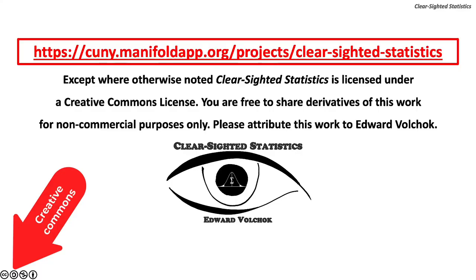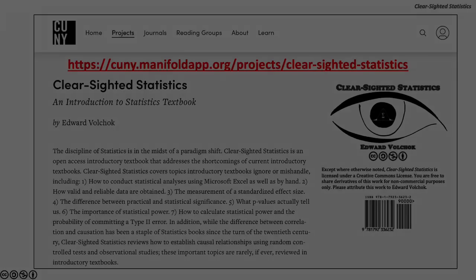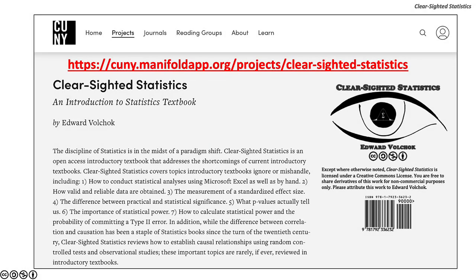Except where otherwise noted, Clear Sighted Statistics is licensed under a Creative Commons license. You are free to share derivatives of this work for non-commercial purposes only. Please attribute this work to Edward Volchak. You can access Clear Sighted Statistics for free, along with its Excel and PowerPoint files, on the CUNY Commons.